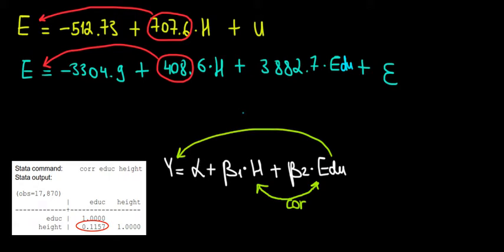So notice what happens over here. In our case, in the beginning, we had an omitted variable bias in the first regression when we were just using the effect of height on education because we were missing a variable.